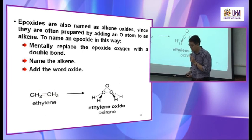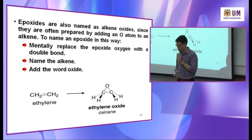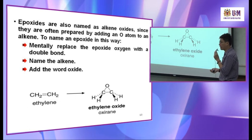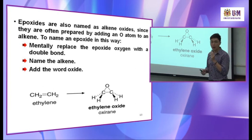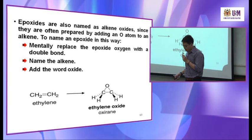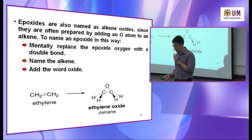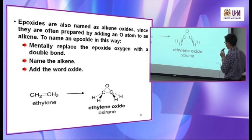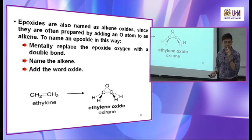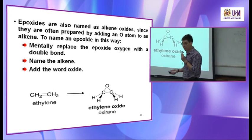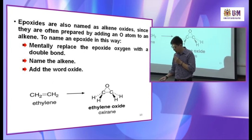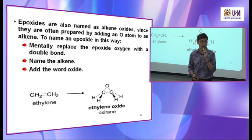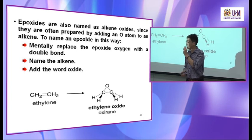The third way of naming is as an alkene oxide. Epoxides are synthesized from alkenes — ethylene is an alkene — so you add an O to it and it becomes an alkene oxide. You mentally replace the epoxide oxygen with a double bond, then name it as the corresponding alkene oxide. For example, this is called ethylene oxide, which is also an oxirane. So altogether there are three ways of naming epoxides.